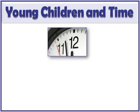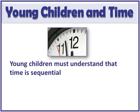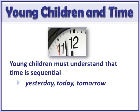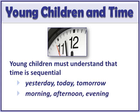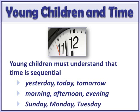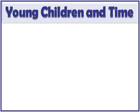One goal most teachers have for calendar time is for students to understand that time is sequential — that today, yesterday, and tomorrow follow an order, the months of the year cycle back, and the days of the week occur in sequence. For example: yesterday, today, and tomorrow; morning, afternoon, and evening; Sunday, Monday, and Tuesday. But again, these are very abstract concepts that are very hard for K-2 students to grasp.